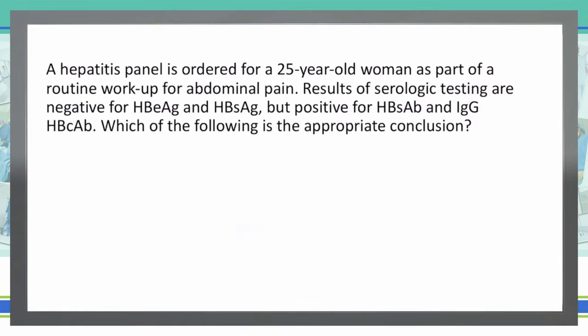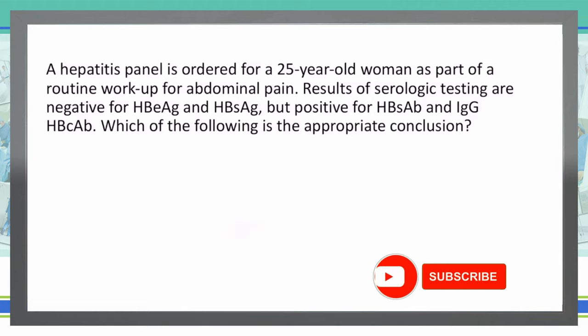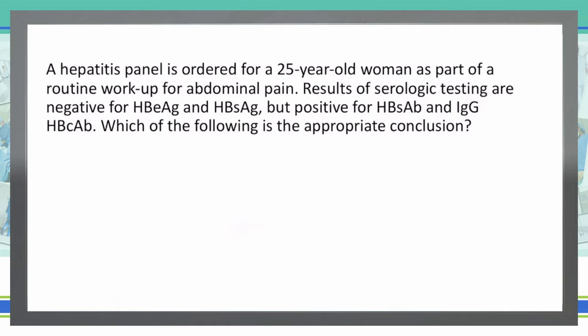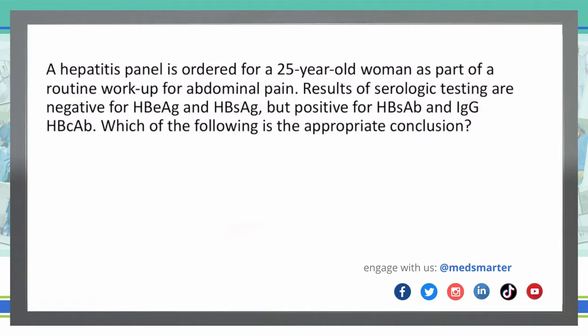As always, we start with the last sentence of the vignette and then read the rest. Which of the following is the most appropriate conclusion? A hepatitis panel is ordered for a 25-year-old woman as part of a routine workup for abdominal pain. Results of the serologic testing are negative for the hep B envelope antigen and the hep B surface antigen, but positive for the hep B surface antibody and IgG hep B core antibody. Which of the following is the most appropriate conclusion?